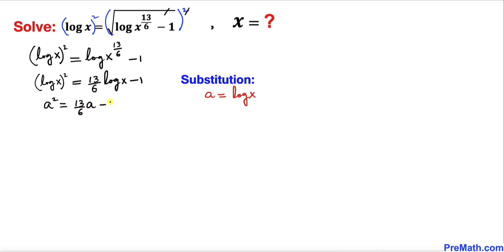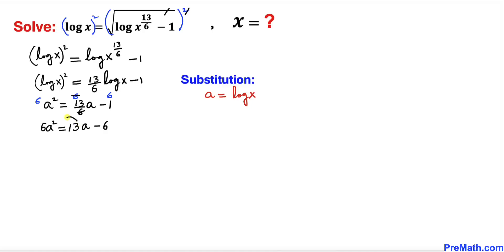After substitution we have a squared equals to 13 divided by 6 times a minus 1. Now let's go ahead and remove this fraction by multiplying by 6 across the board with each and every term. The left hand side becomes 6a squared, the 6 in the denominator cancels, giving us 13a, and minus 1 times 6 is 6. Now let's move everything to the left hand side.